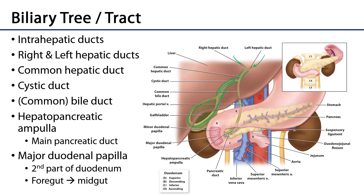The gallbladder will store bile — it's a sac that stores bile — and where the cystic duct and the common hepatic duct join is called the common bile duct, very frequently simply referred to as the bile duct. So if you hear bile duct, think of it as the common bile duct — same difference.